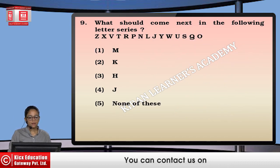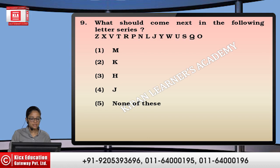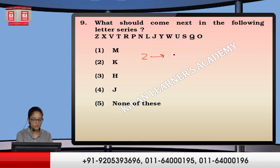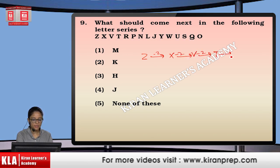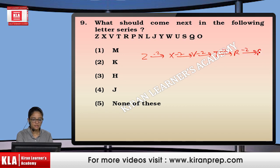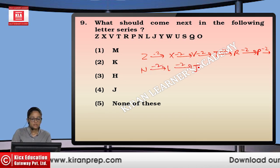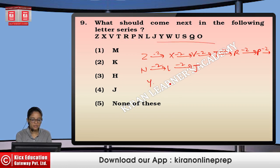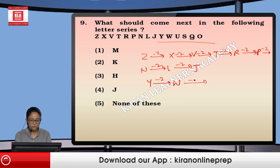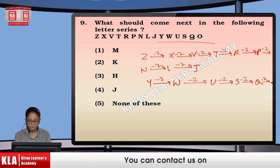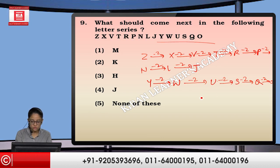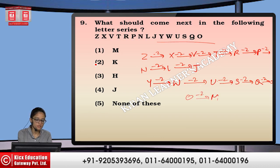Next: what should come next in the following letter series? The first sequence is Z, X, V, T, R, P, N, L, J — doing minus 2 each time. Then the second sequence starts: Y, W, U, S, Q, O, M — also minus 2 each time. The answer is the first option.